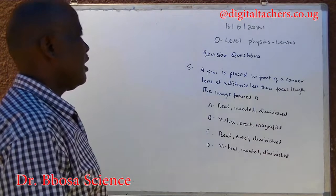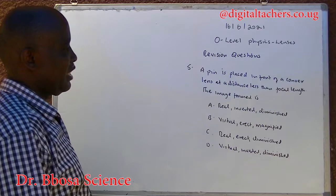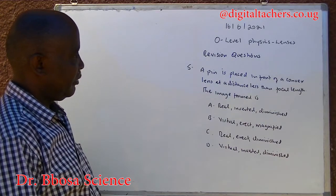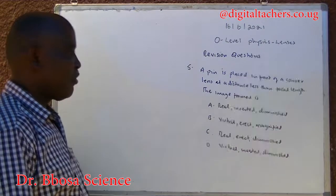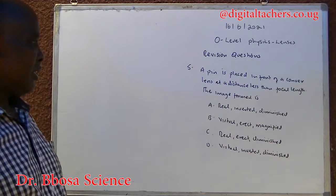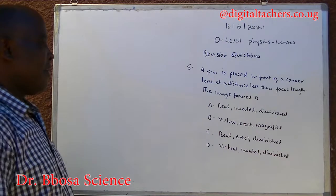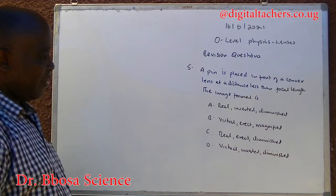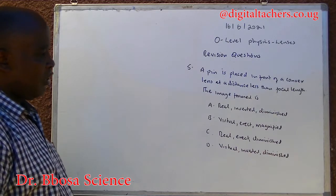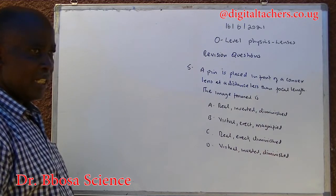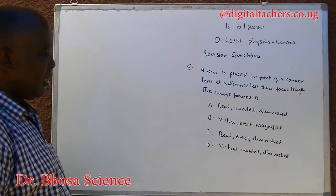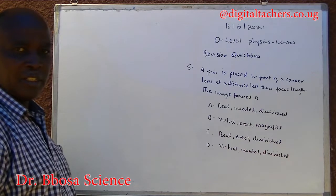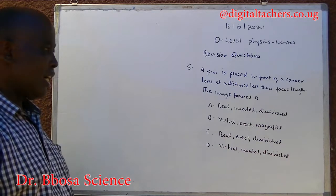Number five: a pin is placed in front of a convex lens at a distance less than the focal length. The image formed is: A — real, inverted, diminished; B — virtual, erect, magnified; C — real, erect, diminished; D — virtual, inverted, diminished. You can pause and answer.